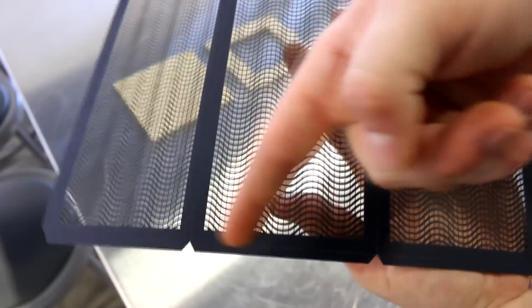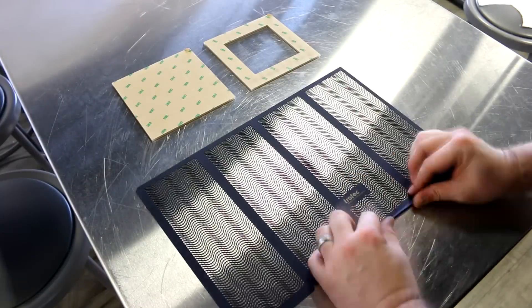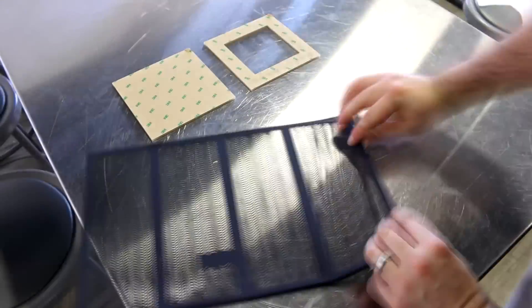Once our lantern was cut and engraved, we then folded it up using the score lines and with a little bit of adhesive closed the lantern up.